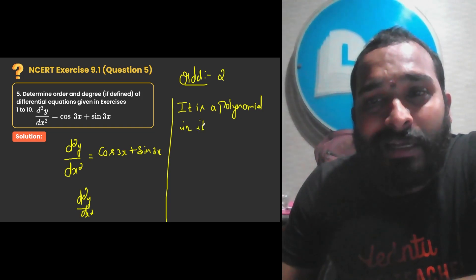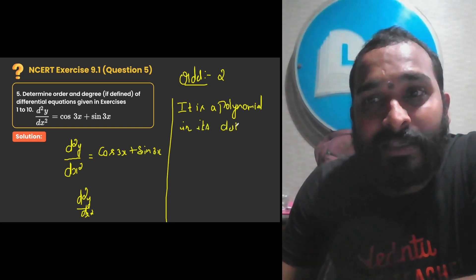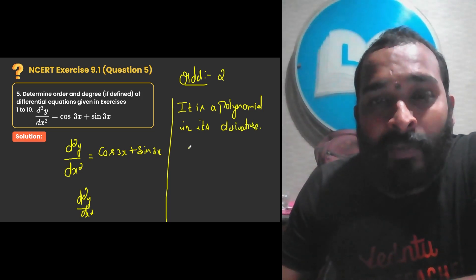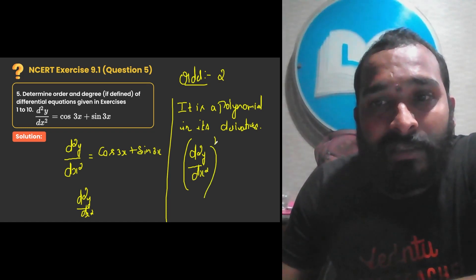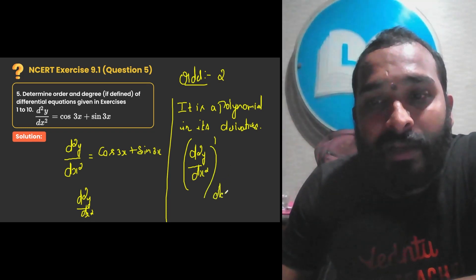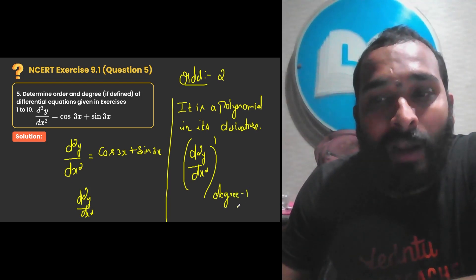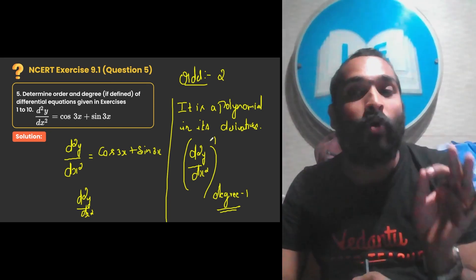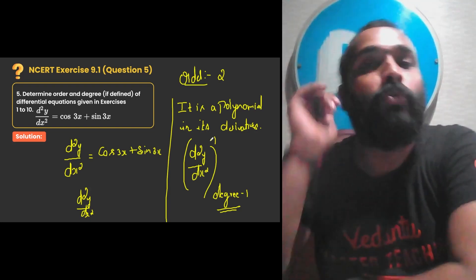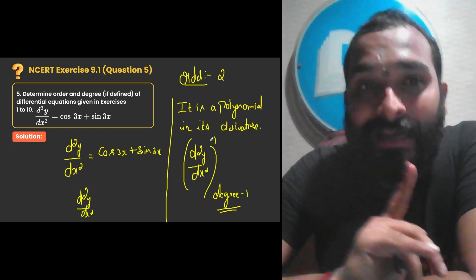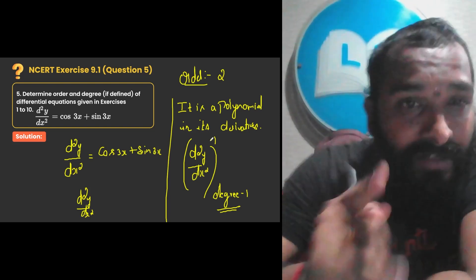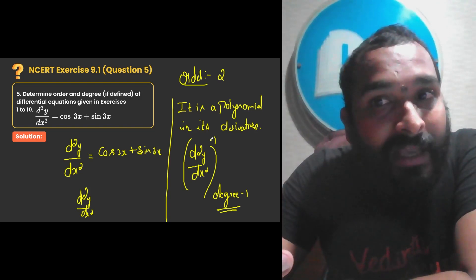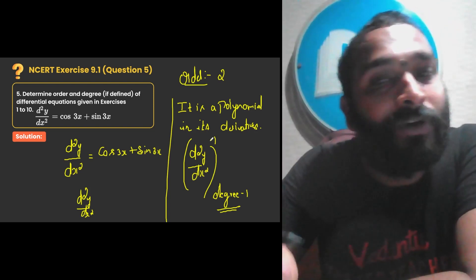So if it is a polynomial in its derivatives, its degree is defined. Degree is the highest power of the highest derivative. What is the power of the highest derivative here? It is 1. So degree is 1. Order is 2, degree is 1. A very important thing to remember: the derivative should not be a function of any other function. If it was sine of dy/dx, we would write degree is not defined. Since it is sine 3x and cos 3x, degree is defined.